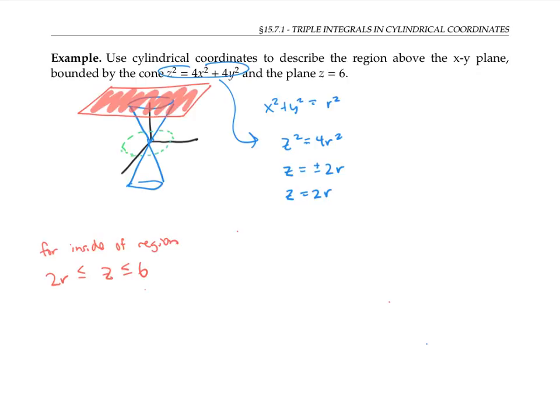The radius is between zero and three. The three is because the very widest part of the region is up here, where z is six. And since z equals 2r at this widest point on this cone, when z is six, r will have to be three.